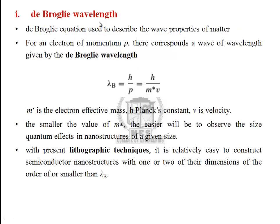De Broglie equations are mainly used to describe the wave properties of matter. Consider an electron of momentum P. The de Broglie wavelength can be written as lambda B is equal to H divided by P, where H is Planck's constant and P is momentum, which is equal to H divided by m-star times v, where m-star is the electron effective mass and v is the velocity.